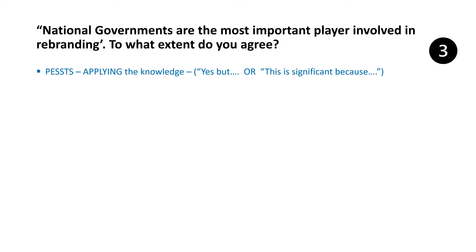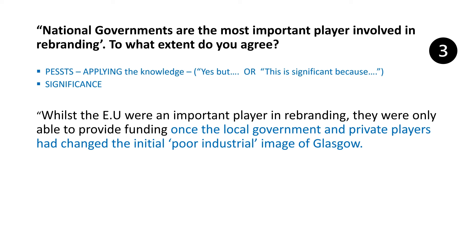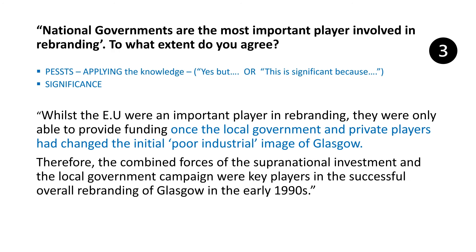When applying this argument, I say they're important — similar to national government — because of money, but I look at significance again. I say that this only really happened because local government and other players had already built up the image that Glasgow was cultural; they'd got rid of the industrial image. Then the EU came in with funding. The EU didn't come in with funding, change the image, and lead to positive changes — it was local government that made the change first, and the EU just backed it up with cash later on. So I'm saying it needs a combination of forces, especially in the early 90s.